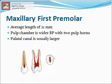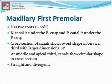Maxillary first premolar: this tooth generally has two roots with two canals and an average length of 21 mm. The pulp chamber is wider buccopalatally with two pulp horns corresponding to the buccal and palatal cusps. The palatal canal is usually larger than the buccal canal. The buccal canal is under the buccal cusp and the palatal canal is under the palatal cusp. Cross section shows ovoid shape in the cervical third with larger dimensions buccopalatally; at middle and apical thirds, canals show a circular shape. The root canals are usually straight and divergent.